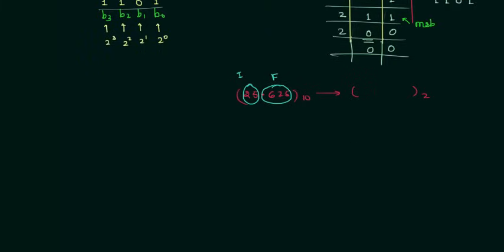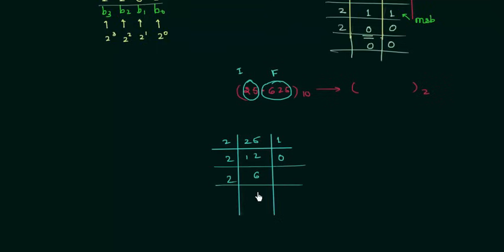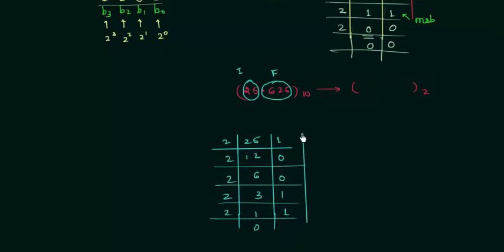We will do this quickly since you already know the concept. Dividing 25 by 2 gives quotient 12, remainder 1. Continuing: quotient 6, remainder 0; quotient 3, remainder 0; quotient 1, remainder 1; quotient 0, remainder 1. The binary equivalent for 25, reading bottom to top, is 11001, where the bottom remainder is the MSB and the first remainder is the LSB.